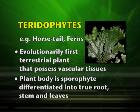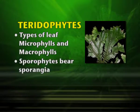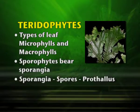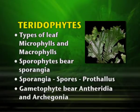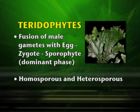Pteridophytes have two types of leaves: microphylls, which are small leaves, and macrophylls, which are the bigger leaves. The sporophyte bears sporangia, which produce spores that form the prothallus. The gametophyte bears antheridia and archegonia. The fusion of the male gamete with the egg results in the formation of a zygote, which then develops into the sporophyte — the dominant phase. They are homosporous as well as heterosporous, meaning they may produce similar or dissimilar spores.